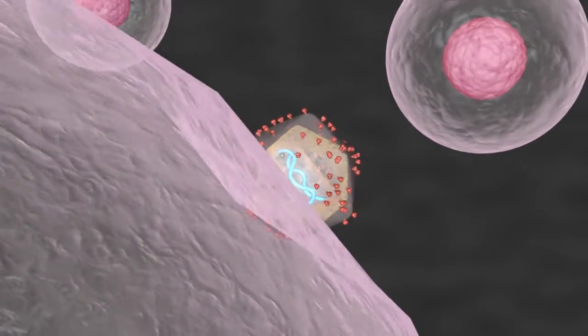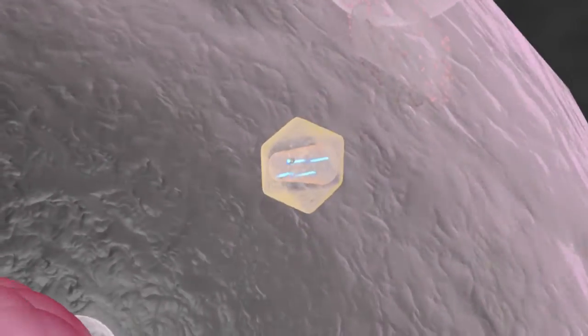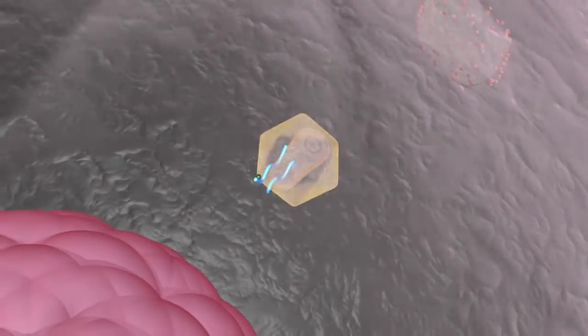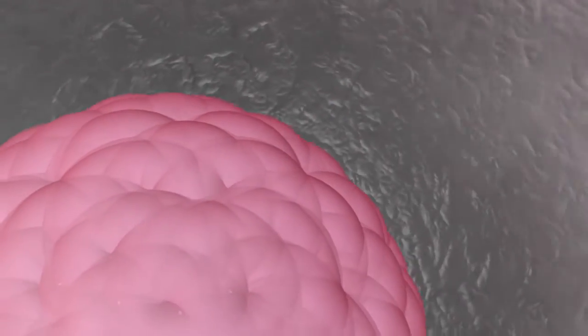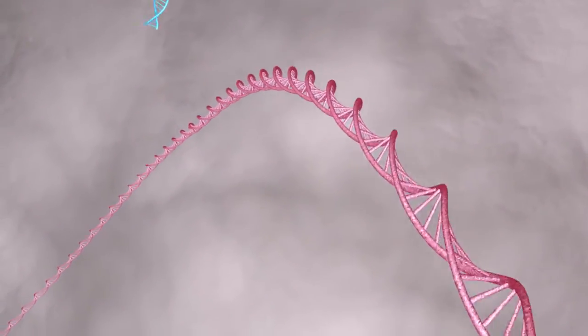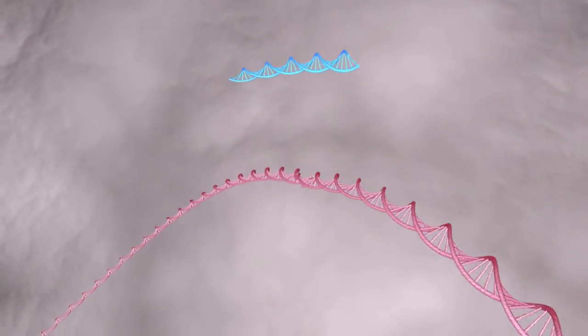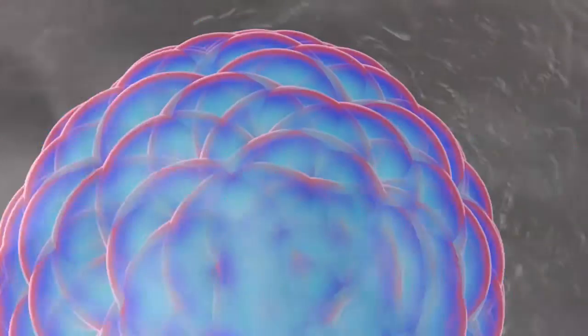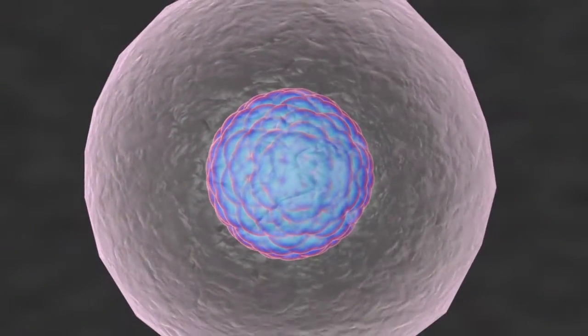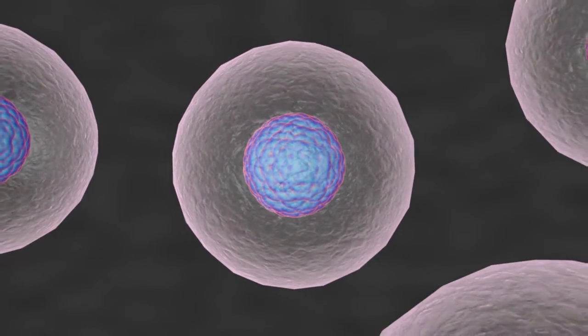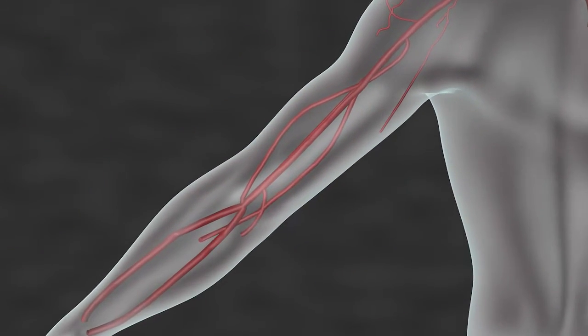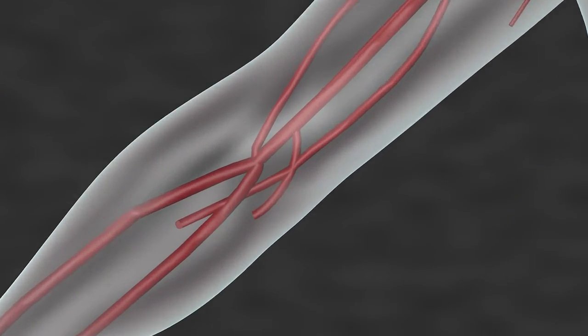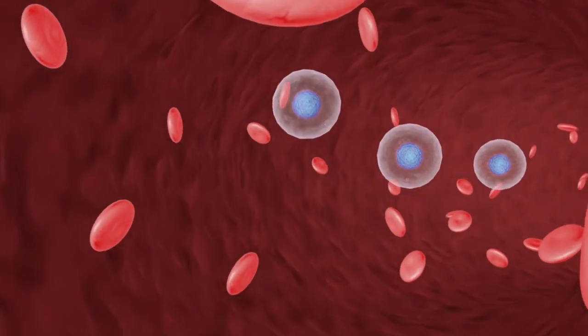The viral vector enters the cell nucleus and delivers the therapeutic DNA sequence. Within the nucleus, the therapeutic gene sequence is stably integrated into the DNA of stem cells. Genetically modified stem cells are then re-injected into the patient's bloodstream, and the cells flow through the vessels.